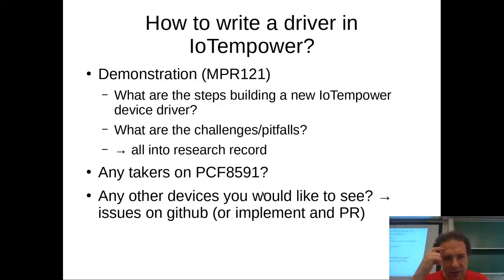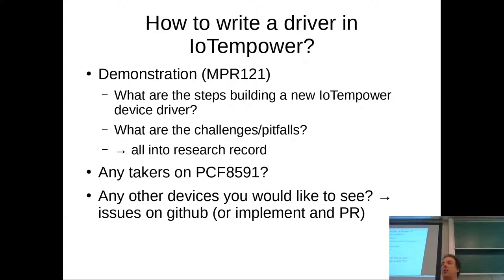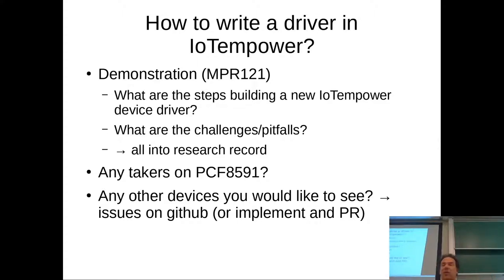Are any of you building the PCF8591? It's a nice analog device — the last device in your kit that I haven't supported yet. It has a very precise 12-bit analog-to-digital converter with four analog inputs. This is useful because the ESP8266 only has one analog input (A0). If you need more analog inputs on one ESP, something like the PCF8591 would come in handy — and it reads 0–5V instead of 0–1V like the ESP's A0 pin.